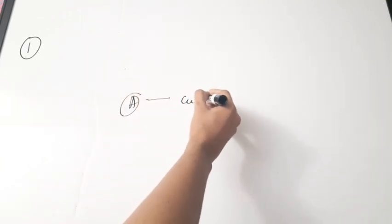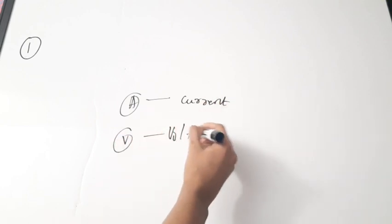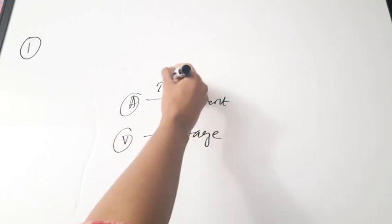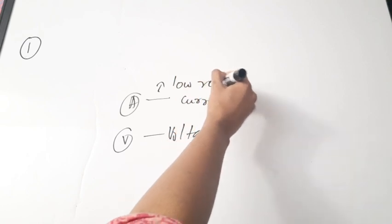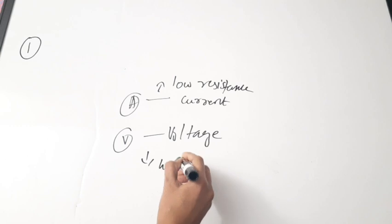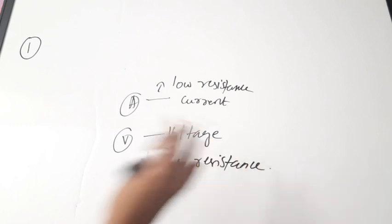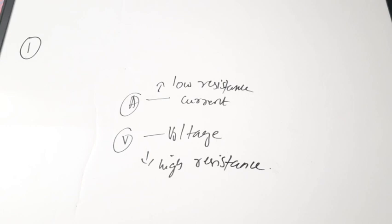So the basic difference is: ammeter is used for measuring current whereas voltmeter is used for measuring voltage. The ammeter has low resistance and the voltmeter has high resistance. These are the very basic things you should know. We have done separate videos on these two topics.